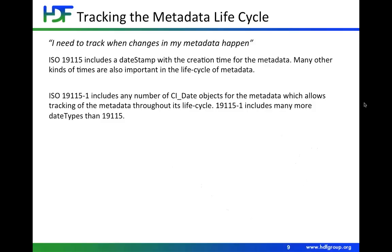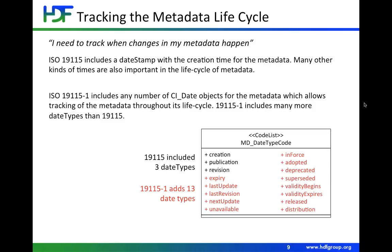We've also added a significant number of new data types. In 19115 there were three date types — creation, publication, and revision. In 19115-1, 13 new types were added, giving us a much broader standard vocabulary for describing types of dates. Of course, this is a code list, so communities can add other things to this code list if they need other types as well.